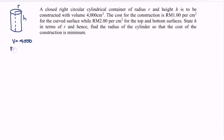As we know, the volume of a cylinder is V = πr²h. The cost for construction is RM1 per cm² for the curved surface and RM2 per cm² for the top and bottom surfaces.